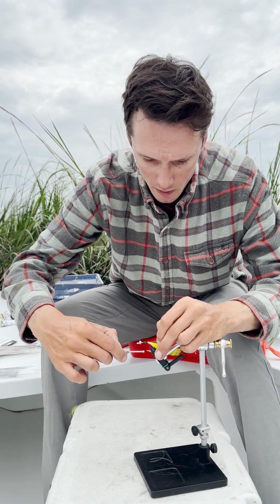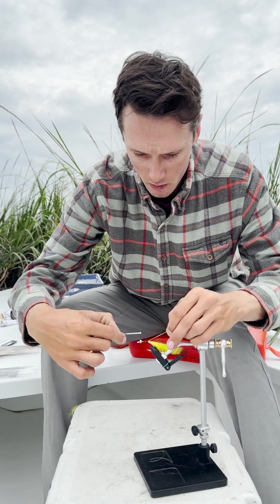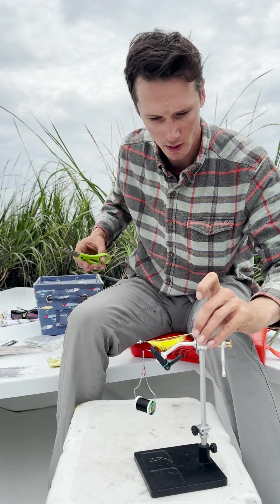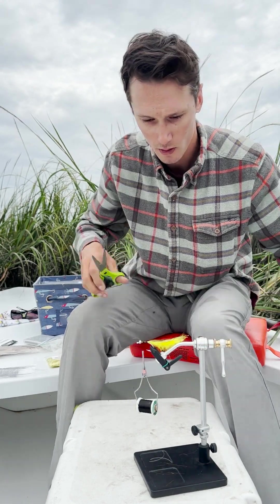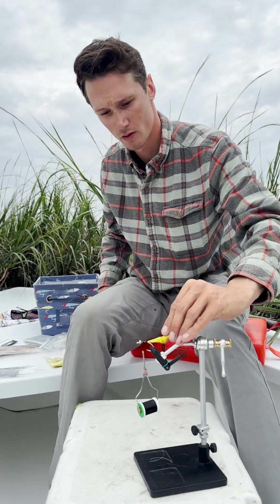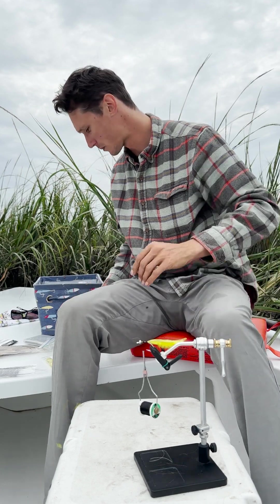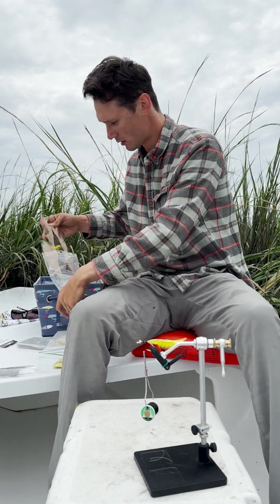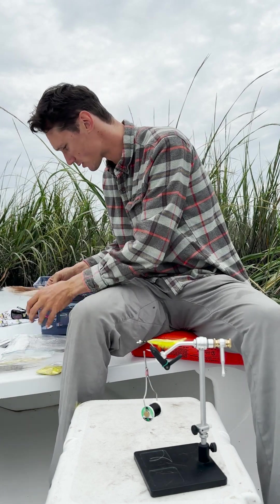All right, that's three strands of the gold. Tie those guys in, try to make them just about the same length as that tail, trim that back a little bit. Nice. All right, next bucktail, this is just a natural tan.